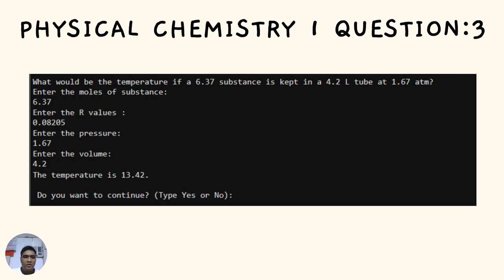Question number three: What would be the temperature if 6.37 moles of a substance is kept in a 4.2 liter tube at 1.67 atmospheric pressure? We need to enter the moles of the substance, which is 6.37. Enter the R value, which is 0.08205. Enter the pressure, which is 1.67. Enter the volume, which is 4.2. The result is a temperature of 13.42.